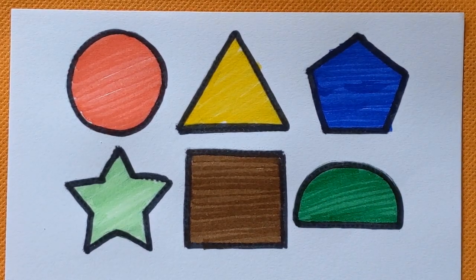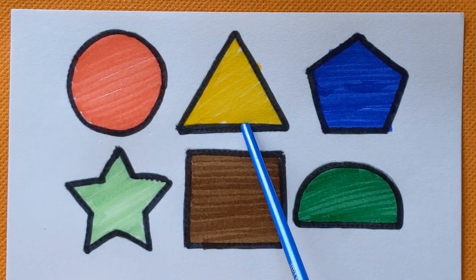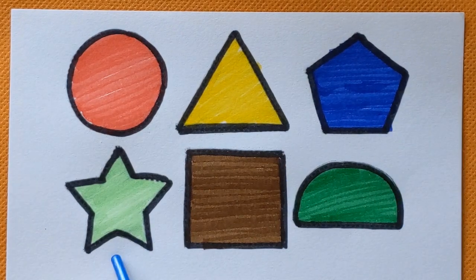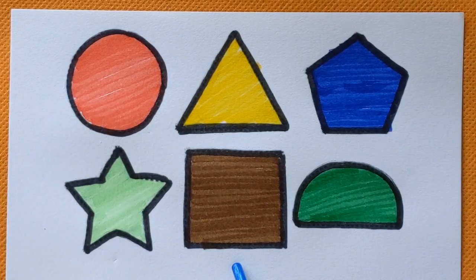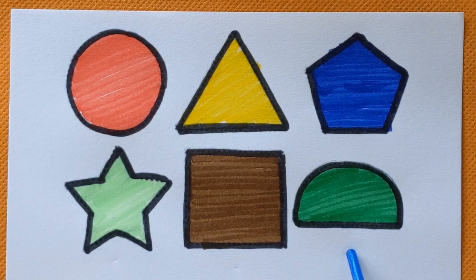Let's revise with me. This is circle, red color. Triangle, yellow color. This is pentagon, blue color. Star, light green color. Square, brown color. And semi-circle with a dark green color.